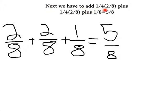Next, we have to add 1/4, which is 2/8 simplified, plus 1/4, which is 2/8 simplified, plus 1/8 which equals 5/8. 2/8 plus 2/8 plus 1/8 equals 5/8.